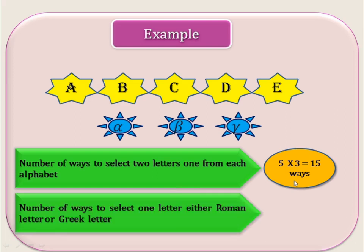Next, how many ways can we select 1 letter that is either a Roman letter or a Greek letter? Here we have to select either one letter, so we go to the rule of sum. The answer is 5 + 3 = 8 ways.